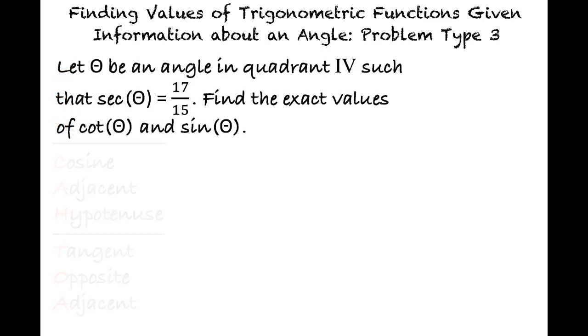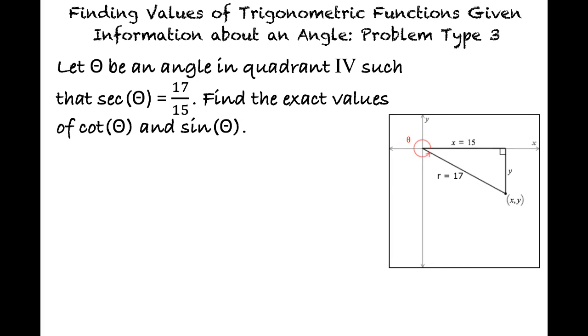Let theta be an angle in quadrant 4 such that secant of theta equals 17 over 15. Find the exact values of cotangent of theta and sine of theta. We can start by recalling that the secant of theta is equal to the hypotenuse over the adjacent side. Thus, the hypotenuse is 17 and the adjacent side is 15.